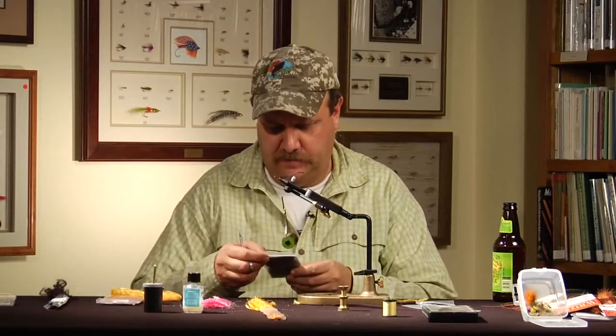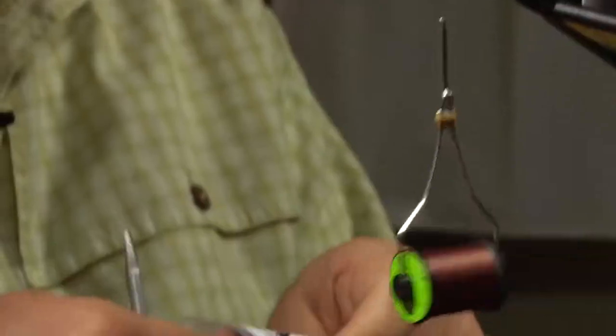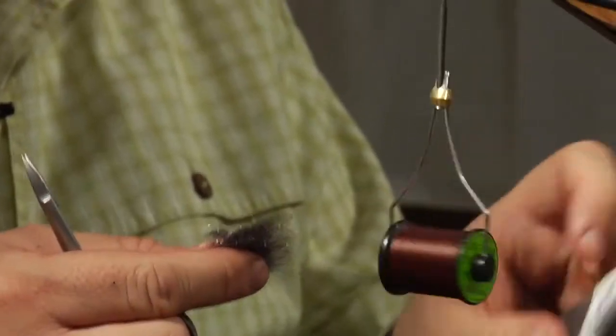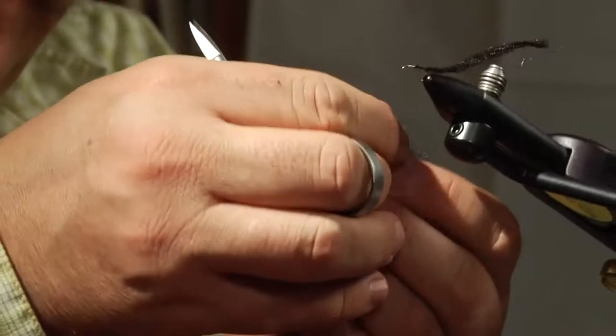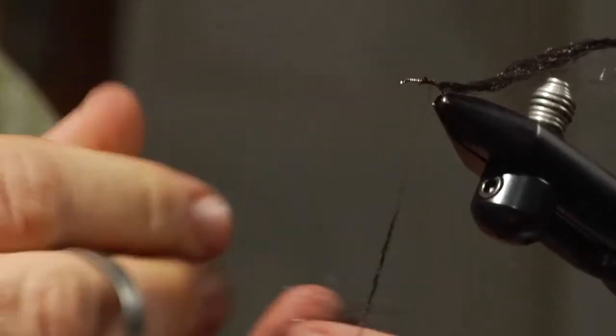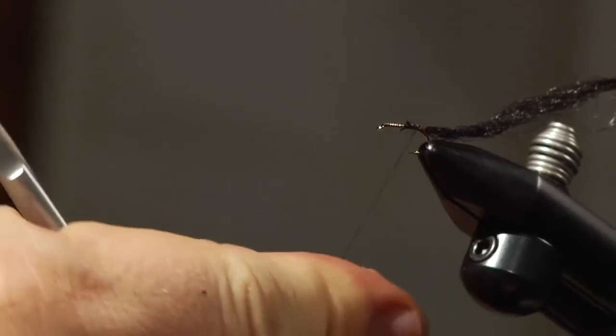This is Harrop's caddisemerger nymph dubbing in blackish brown. If you look at a black ant, they're not black black. They've kind of got a little different coloring to them. And this one seems to do a great job of mimicking that when it's wet.